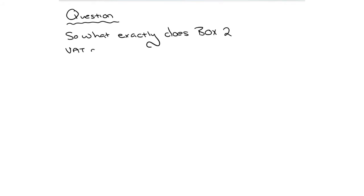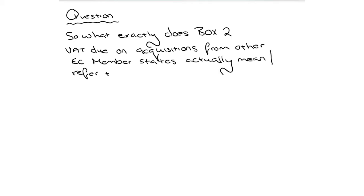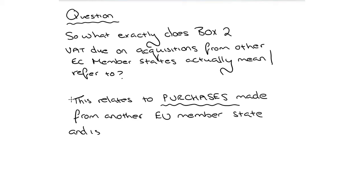So what exactly does box 2 VAT due on acquisitions from other EC member states actually mean or refer to? So this relates to purchases made from another EU member state and is the VAT element of this. So that might surprise a few people, it's the purchases. So HMRC has a list of those countries that are included in the EU member states. If you make a purchase from any one of those countries, then the VAT is going to go into this box.